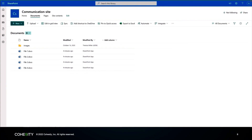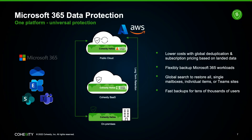Let's shift gears to wrapping up. Microsoft 365 Data Protection from Cohesity offers you the flexibility to protect your OneDrive, Exchange Online, SharePoint, and Teams. You can do that through our as-a-service offering, on-prem, or our cloud edition. We also offer long-term retention with the on-prem solution — lower costs with global deduplication, flexible backup, global search, fast backups, a single UI — a product that will help you be successful when it's time to recover and meet your SLAs.